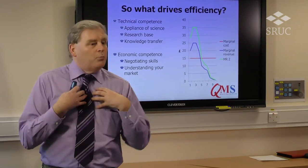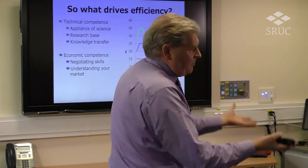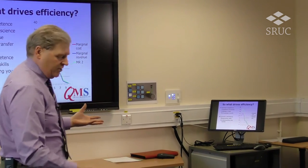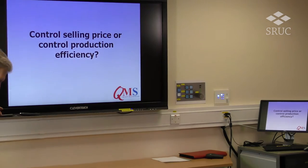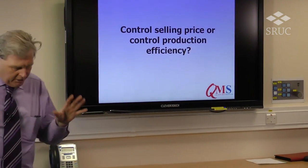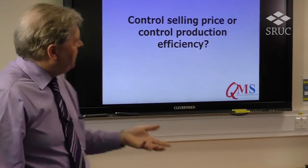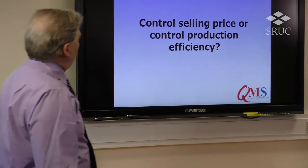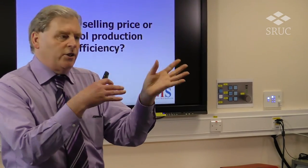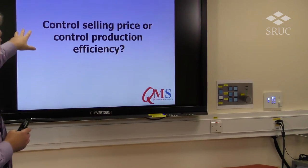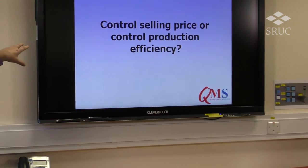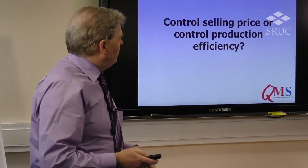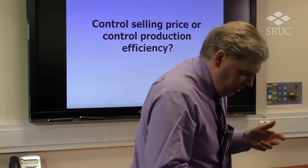I mean economic efficiency when I talk about efficiency, though a farmer may well have a slightly different perception on where to place greater emphasis. But increasingly, we have to recognise what is actually under our control. We often have little control over the selling price — yes, we can do a little bit marginally — but the biggest degree of control we have as businesses is in production efficiency. So let's look at a couple of production efficiencies from the red meat sector.